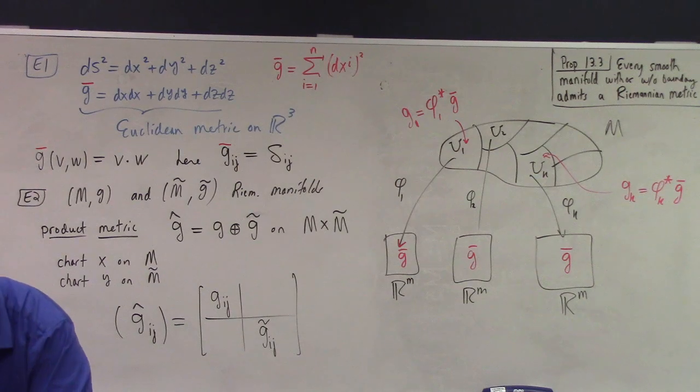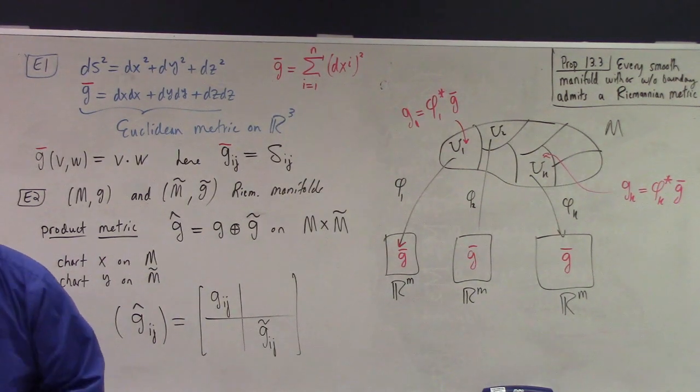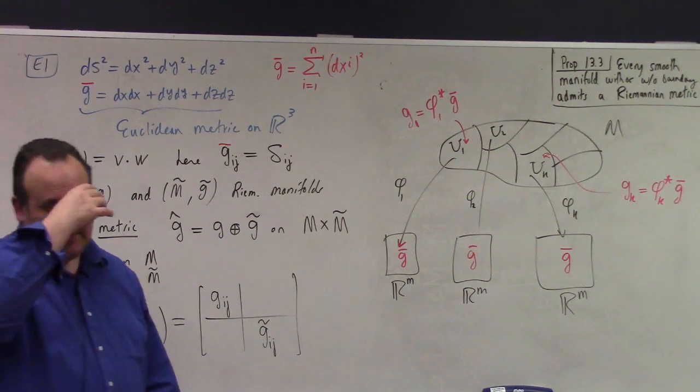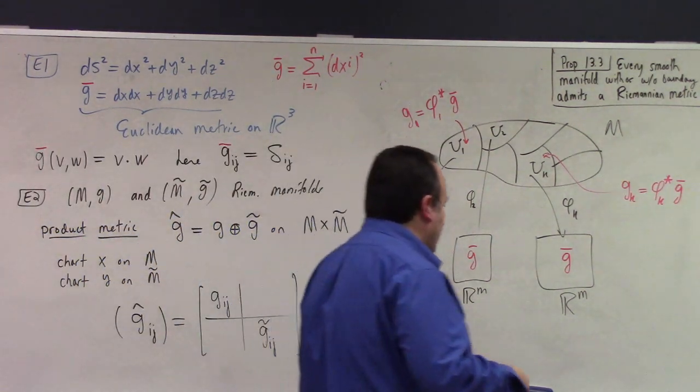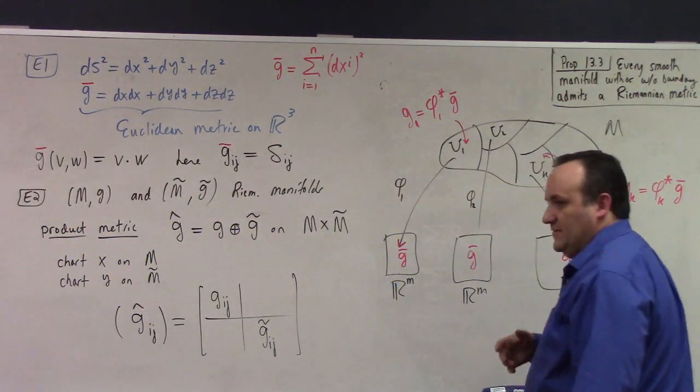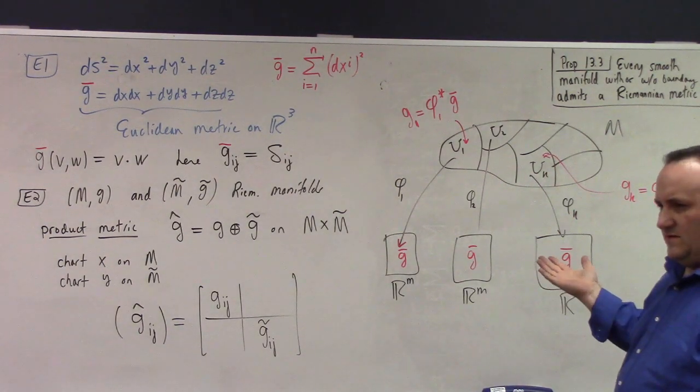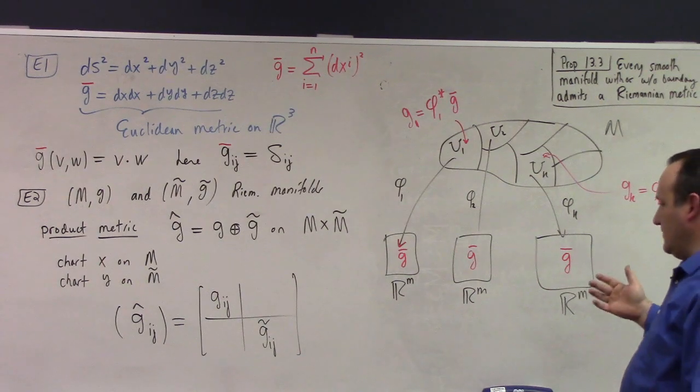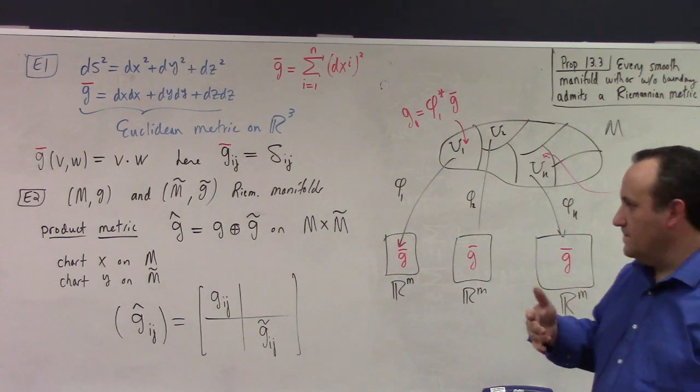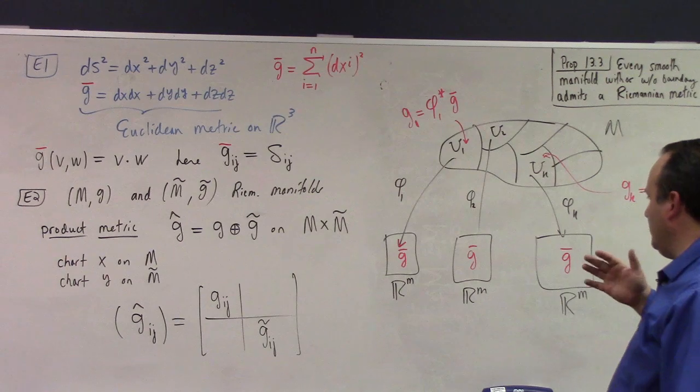So, pull it back under the coordinate chart. The pullback of G-bar, we could call like G1, for instance. Right? And you could pull back, in here, on this guy, you could have the, we could have Gk, the pullback under the kth coordinate chart of G-bar. All right? And, so you have all these, right? And then, you need something called a partition of unity.